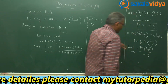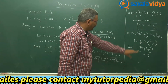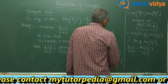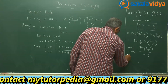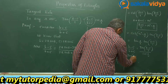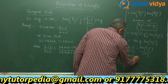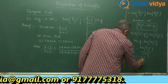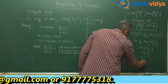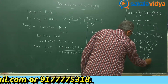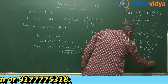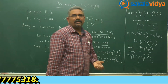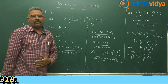Multiplying both sides by cot(A/2), we get tan((B minus C)/2) equals (B minus C)/(B plus C) times cot(A/2). Similarly, the remaining formulas can be derived by following the same approach.